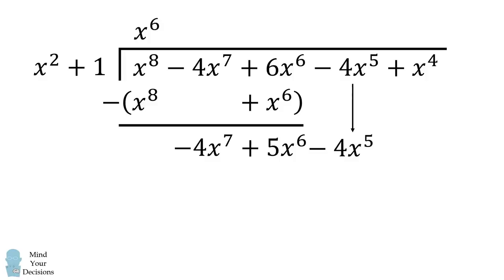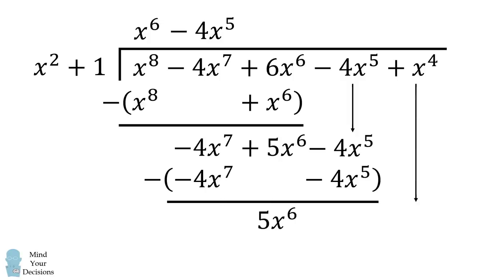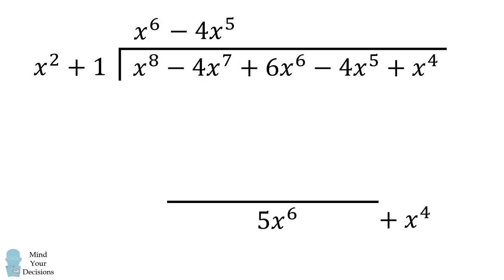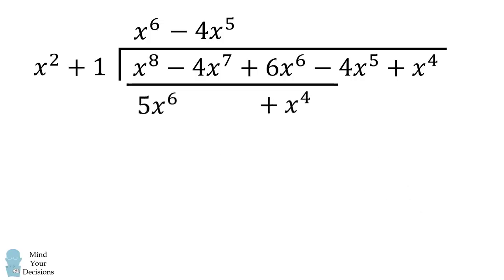We then continue this process. We will eliminate the first term, subtract, and then bring down the next column as appropriate. So the next term will be negative 4x to the power of 5. We get the following result, which we'll subtract. Then we will bring down the next column. Now we've run out of room, so let me just take this result to the top.